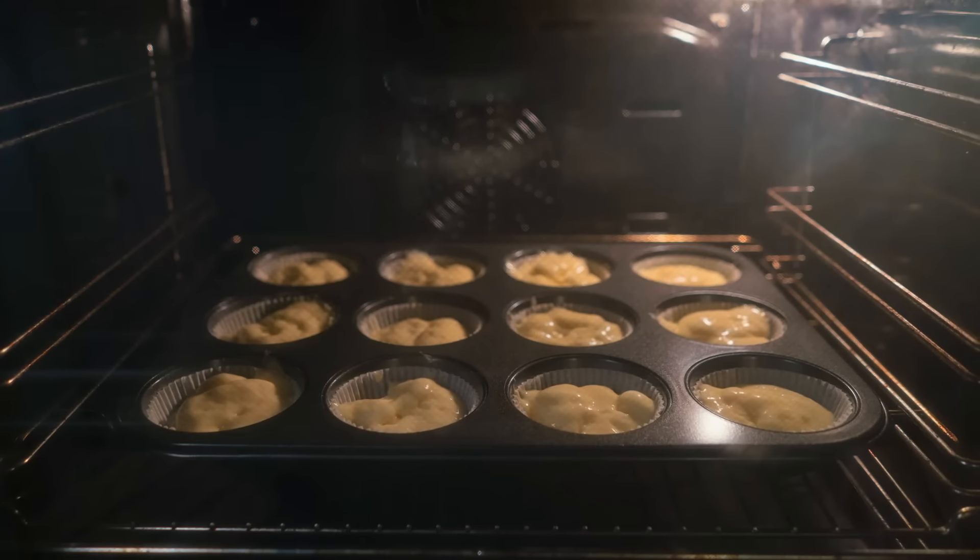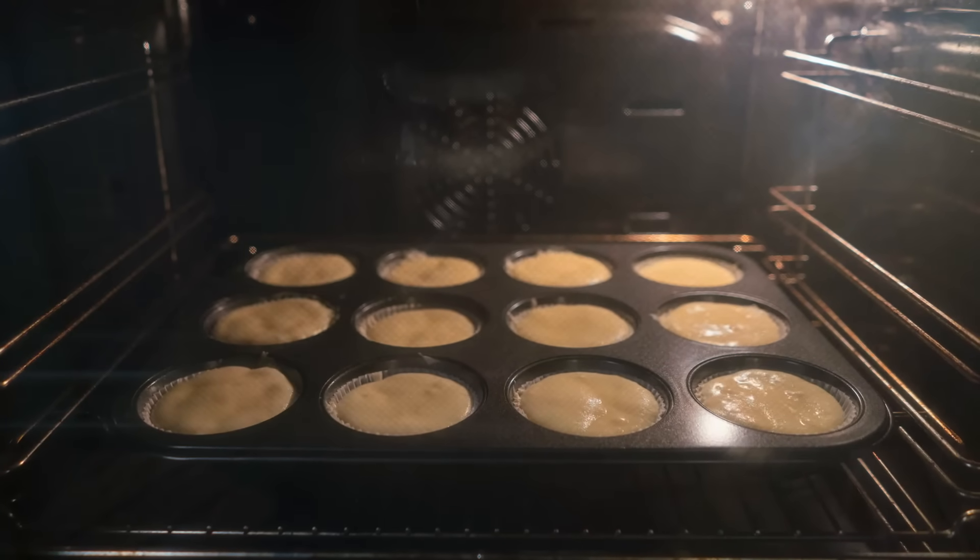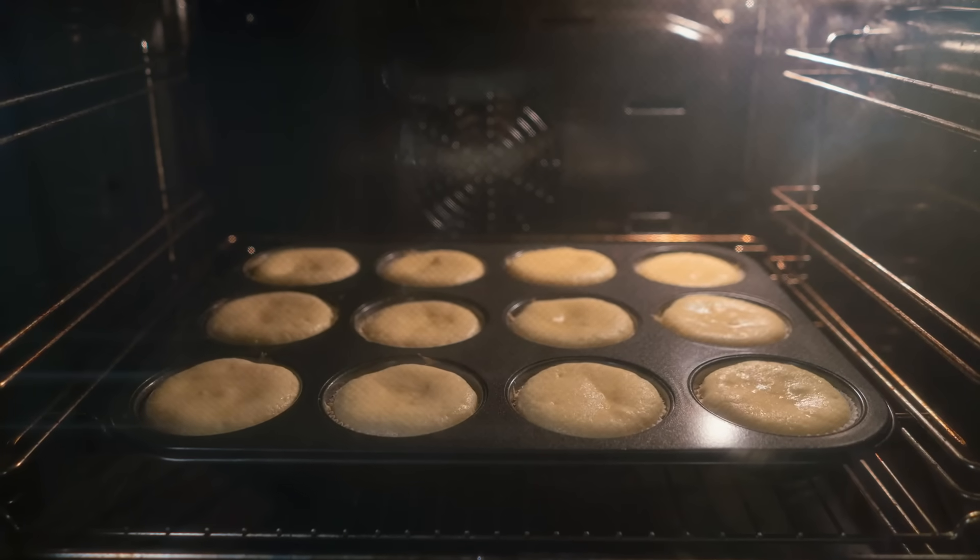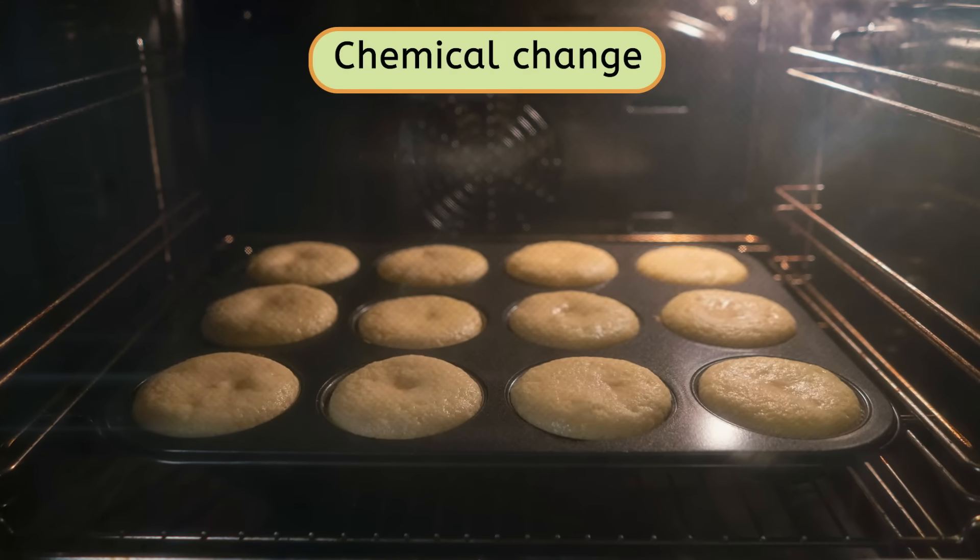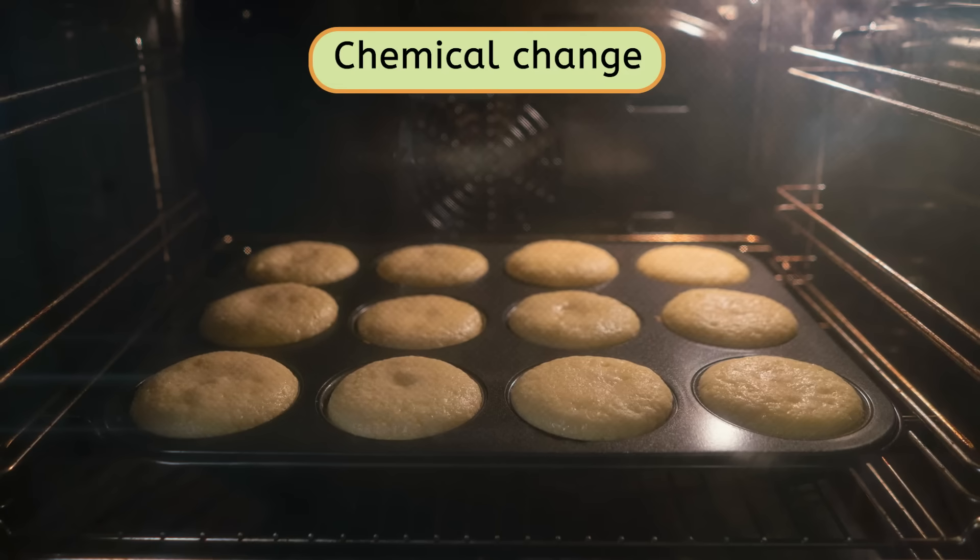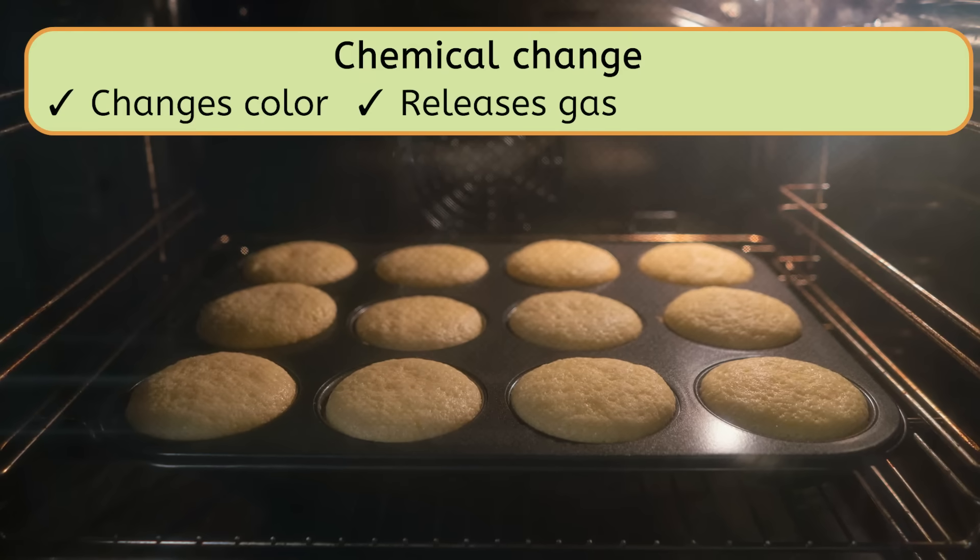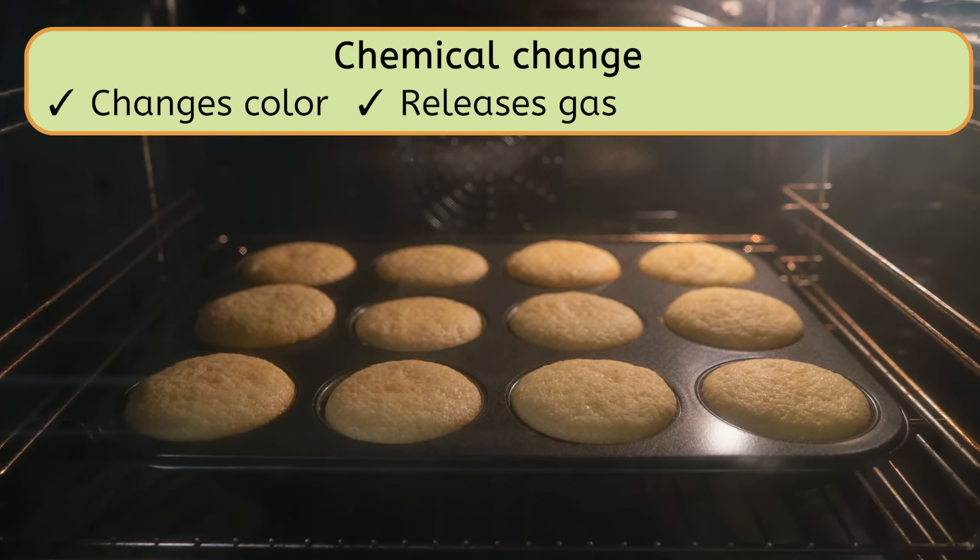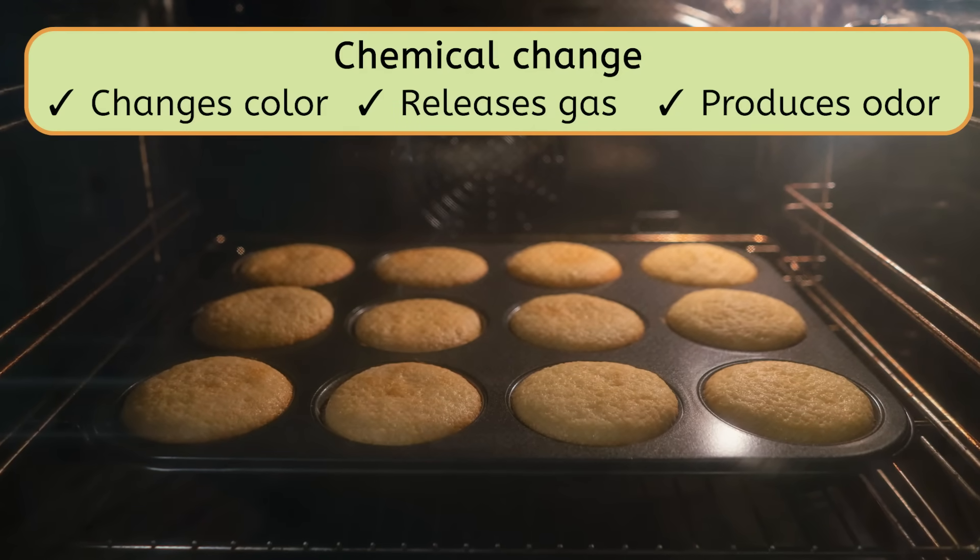Now I've mixed my ingredients together, and these cupcakes are headed for the oven. Do you think baking the cupcakes is a physical change or a chemical change? It's a chemical change. If we observe, we can see several of the signs of a chemical change. The color of the batter is changing, turning into a beautiful golden brown. Gas bubbles are being produced, which is what causes the cupcakes to rise and get nice and fluffy. And that delightful aroma speaks for itself. Mmm, science is delicious.